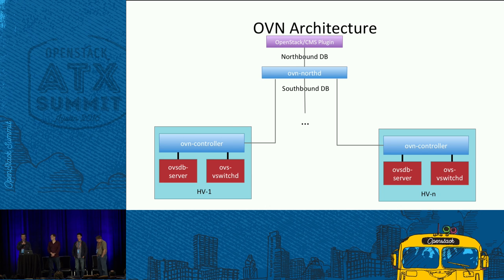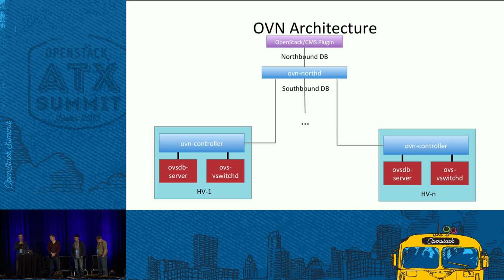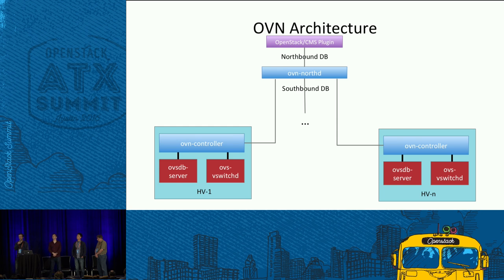The northbound database has only one other client: a daemon called OVN-NorthD. The goal of NorthD is to take concepts familiar to the administrator and translate them into lower-level concepts easier for hypervisors to implement. It translates things like logical routers into what we call logical flows. A logical flow is a lot like an OpenFlow flow, except it uses logical concepts — instead of physical ports, it speaks about logical ports, like a VIF on a VM.